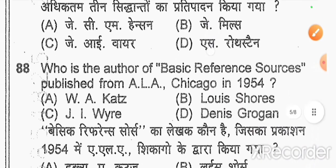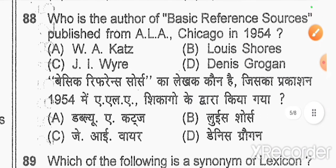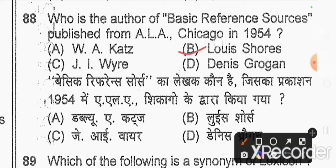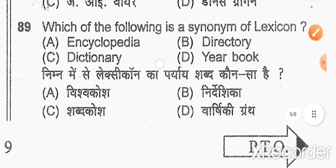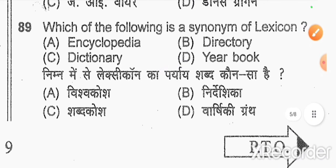Question number 88: who is the author of 'Basic Reference Sources' published by ALA Chicago in 1954? Option B — Louis Shores. Question number 89: which of the following is a synonym of lexicon? Option C — dictionary.